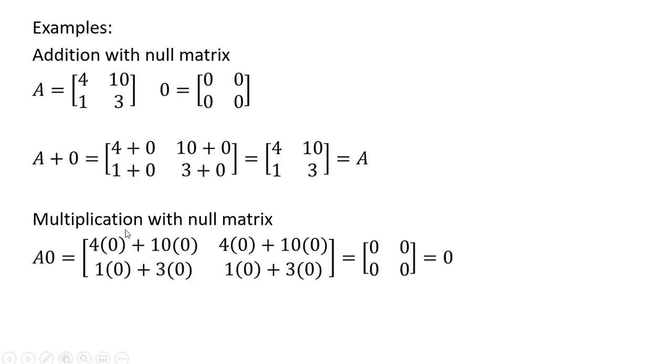Multiplication with a null matrix: we're going to take matrix A and we're going to multiply it by the null matrix. Doing that gives us a null matrix.